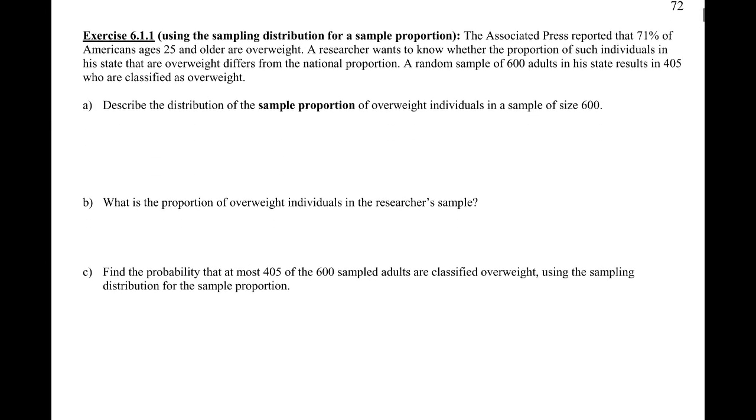We're going to do the exact same problem. We're still going to have a P of 0.71, we still have our n of 600, and we still have our number of successes, our x of 405. But now we're going to do this using the methods for part 6, using this for a sample proportion. The first thing here says, describe our distribution of our sample proportion.